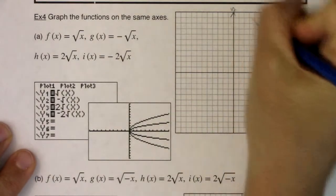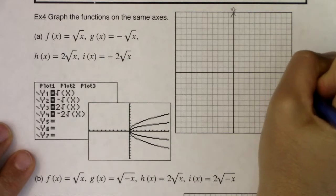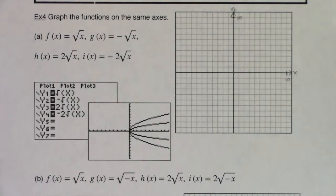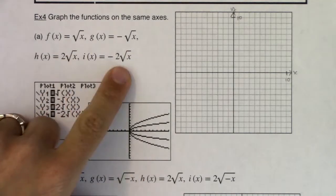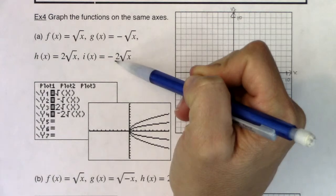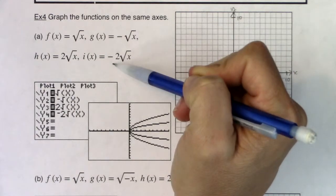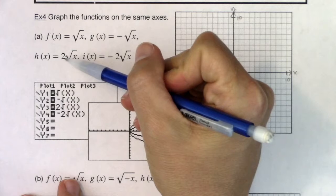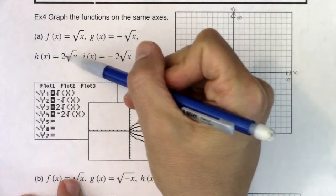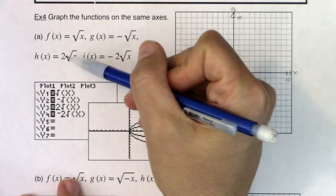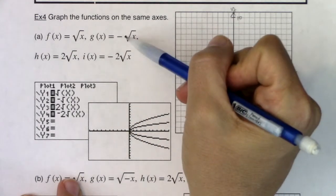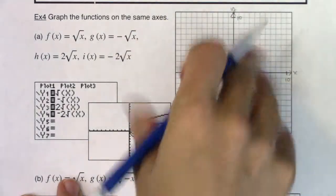Let me label my x and y axes. We have a bunch of radicals to graph: square root of x, negative square root of x, 2 root x, and negative 2 root x. Note the negative symbol is outside of the square root. We've talked about vertical stretching — the multiplier of 2 is also outside the grouping symbol, so we'll have a vertical stretch here, a vertical stretch plus a reflection, and just a reflection.